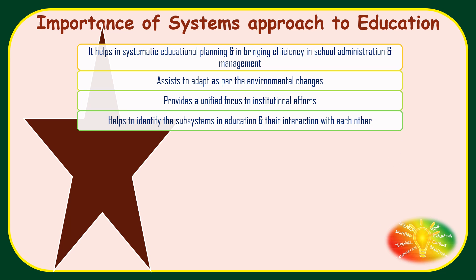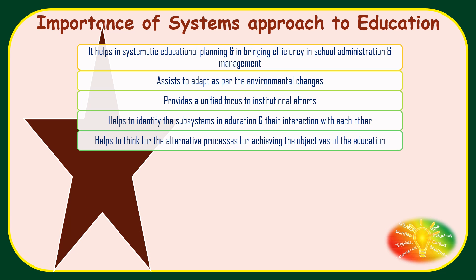It helps to identify the subsystems in education and their interaction with each other. Systems approach helps to think for the alternative process for achieving the objectives of the education. So decision making or problem solving is an important part — that is creativity, divergent thinking, lateral thinking — that is nothing but finding out various alternatives and from those alternatives, choosing the best. So systems approach helps education in this way.